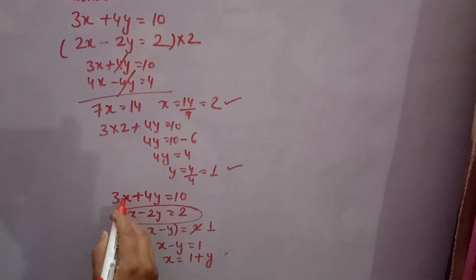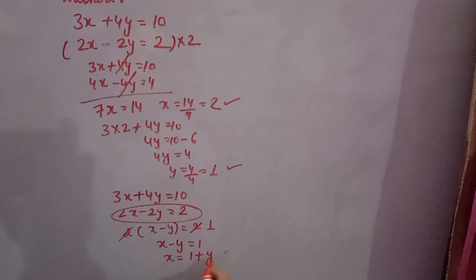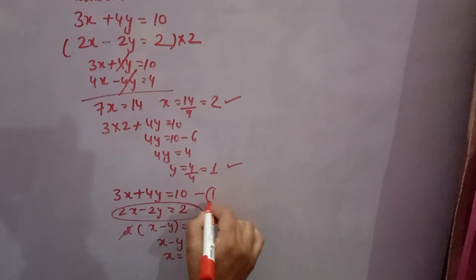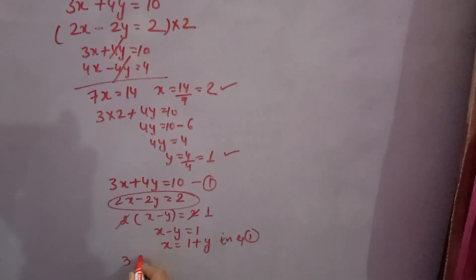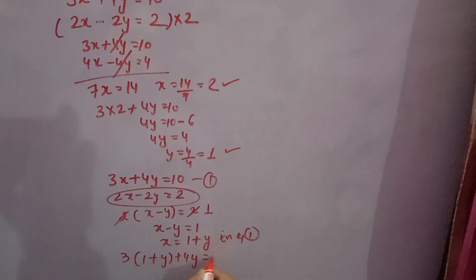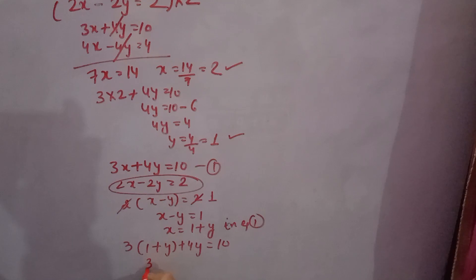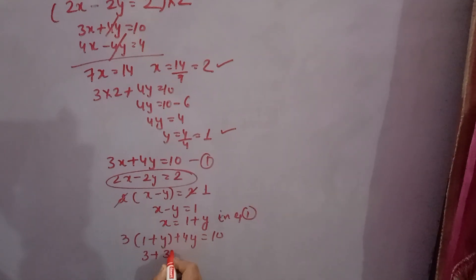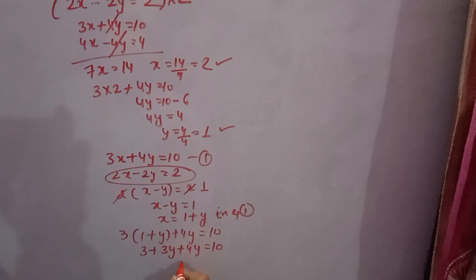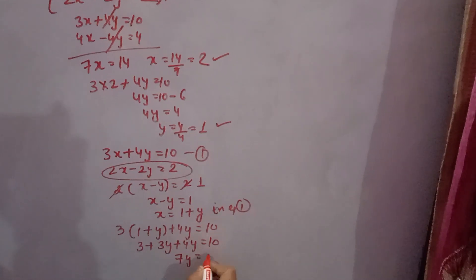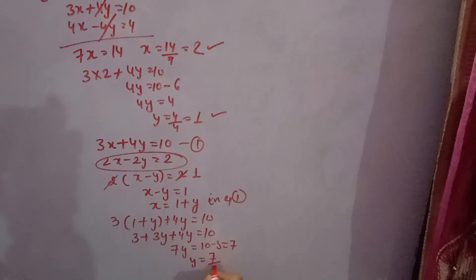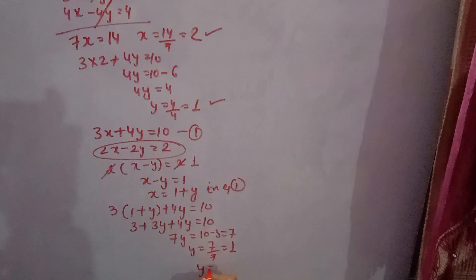Substitute x equals 1 plus y into the first equation: 3 times (1 plus y) plus 4y equals 10. That gives 3 plus 3y plus 4y equals 10, so 7y equals 10 minus 3, which is 7. Therefore y equals 7 over 7, which is 1.